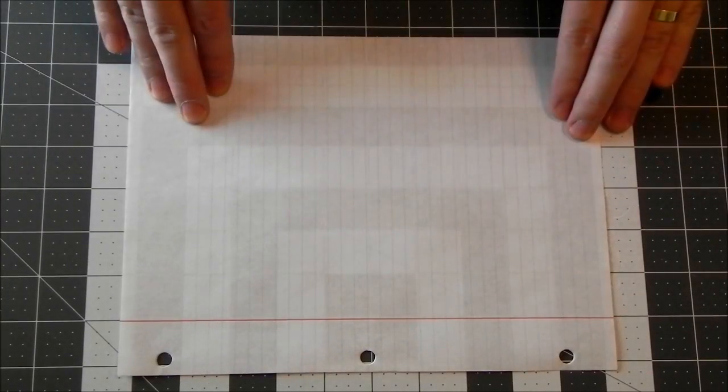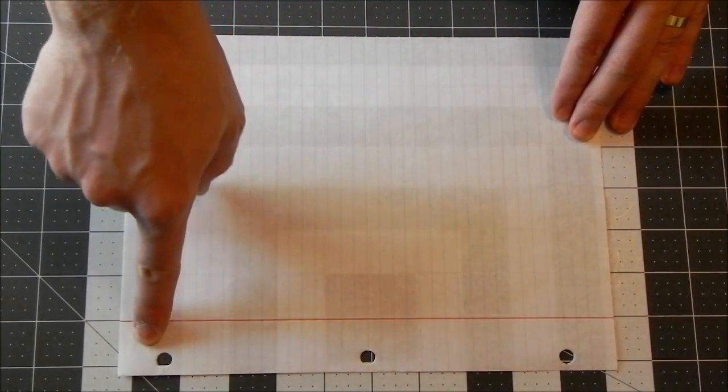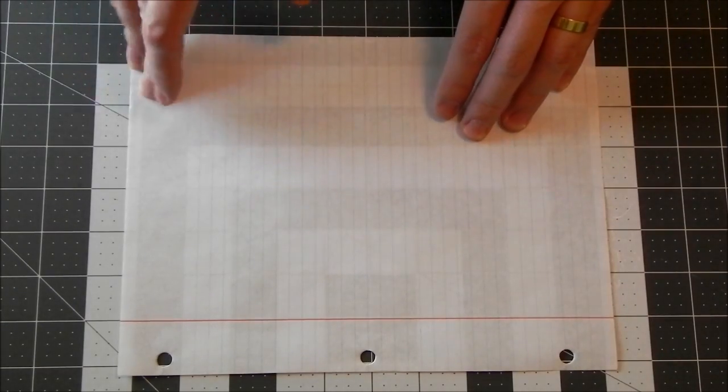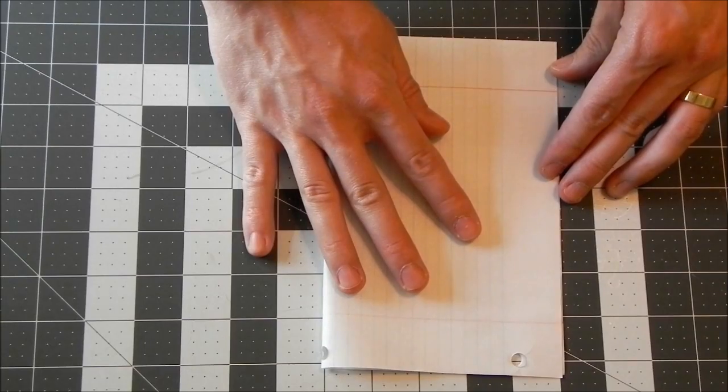You're going to want to start with a piece of paper that is three hole punched because these are going to end up being the eyes of the rabbit. And what we're going to do is fold it in half on the short edge,